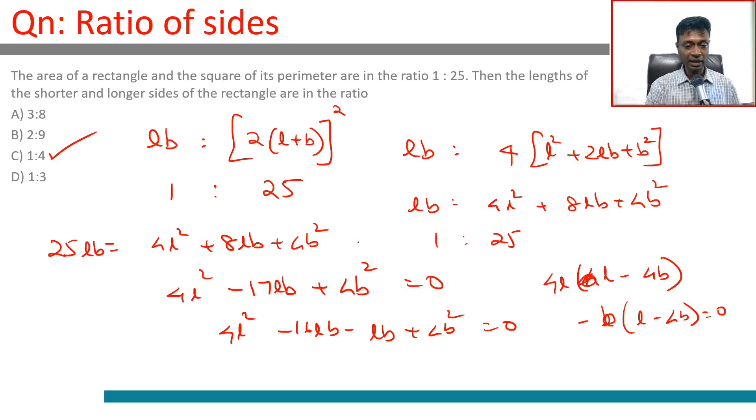We're looking to solve for B by L. If you want to deal with only one variable, you don't like factorizing like this, divide by L square throughout. So, you'll get 4 minus 17B by L plus 4B by L whole square equal to 0. B by L is what we want to find. We'll have 4 minus 17X plus 4X square equal to 0. X is what we need to find. You can simplify and find that. If you don't like dealing with a quadratic equation that has L and B, then create a B by L by dividing by L square throughout and then you're done. You're dealing with only one variable.